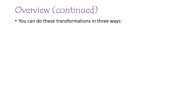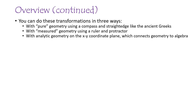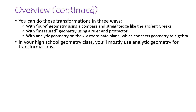You can do these transformations in three basic ways in geometry. One is using pure geometry with a compass and a straight edge, like the ancient Greeks would do it. You could use measured geometry using a ruler and a protractor. And then you can use analytic geometry, where geometric figures are on an XY coordinate plane. In your high school geometry class you'll most likely do analytic geometry for transformations, so that's what we're going to do in this video.